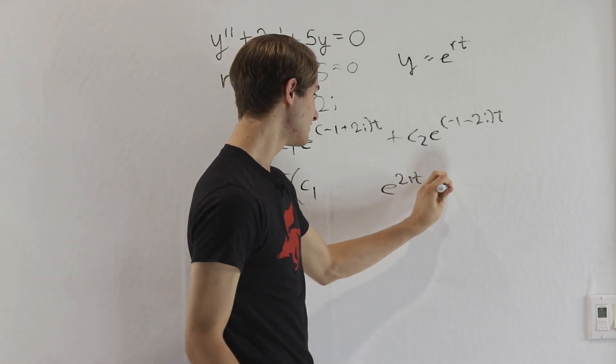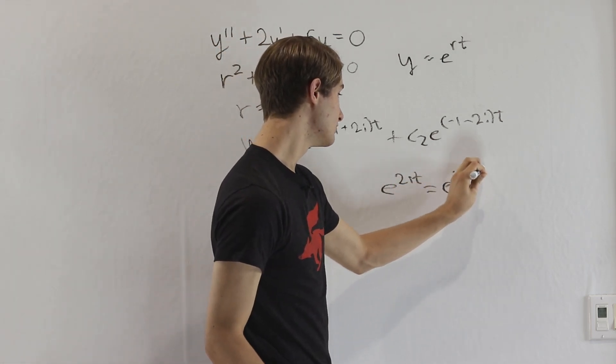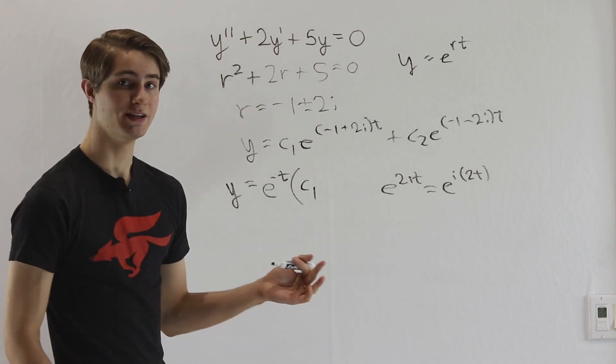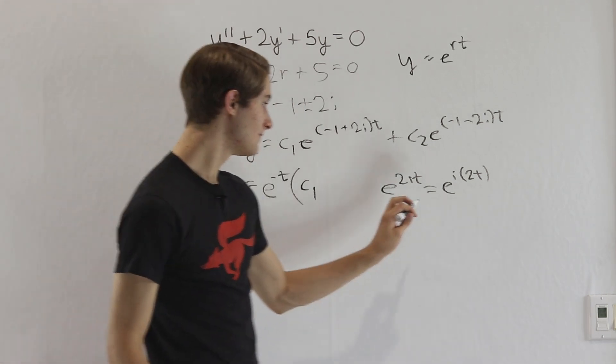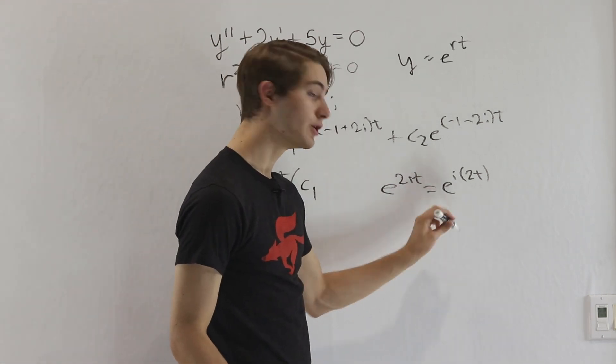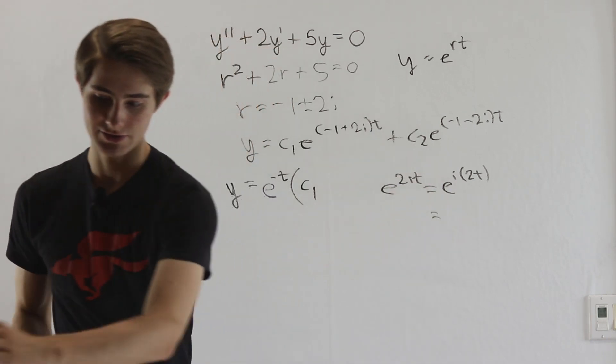Well, e to the 2i t is going to be the same as e to the i times 2t. And by Euler's identity, again there's a proof in the description, this is going to be equal to cosine of 2t plus i sine of 2t.